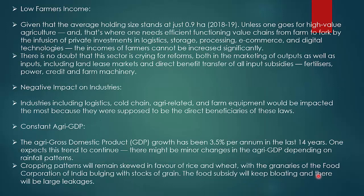Given that the average land holding size stands at just 0.9 hectare, unless one goes for high-value agriculture, one needs an efficient functioning value chain from farm to fork — with private investment in logistics, storage, processing, e-commerce, and digital technologies — to significantly increase farmers' incomes. There is no doubt that this sector is crying for reforms both in marketing of outputs and inputs, including land lease markets and direct benefit transfer of all input subsidies like fertilizers, power, credit, and farm machinery.